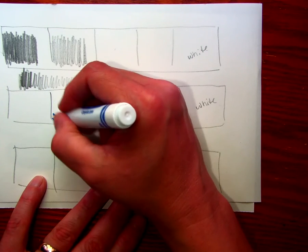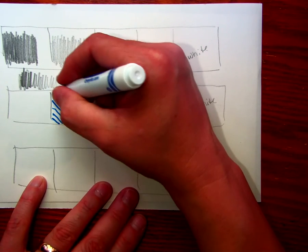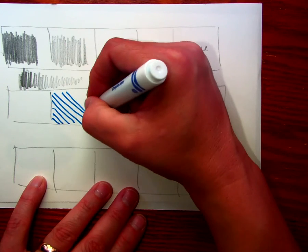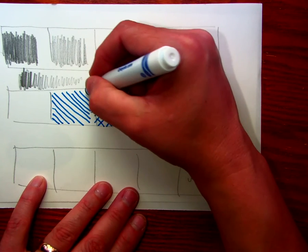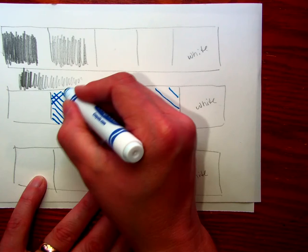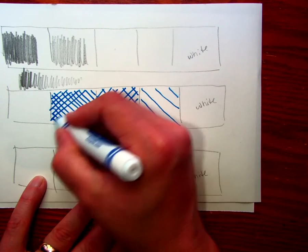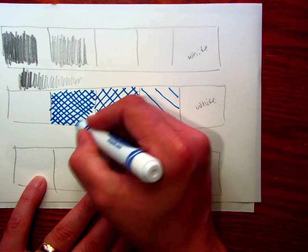So again, they would get closer together. The more I do, the darker the value. So they would get closer together, and there would be more of them, and they would be closer, showing more value.